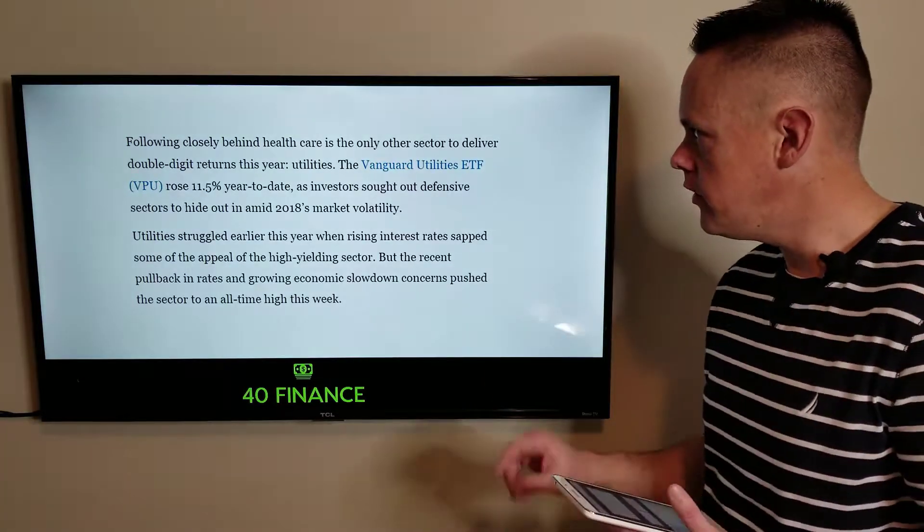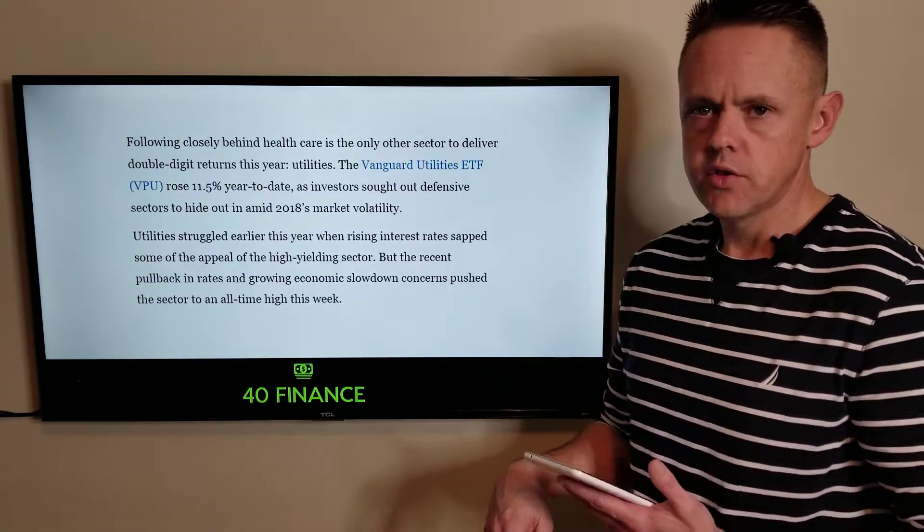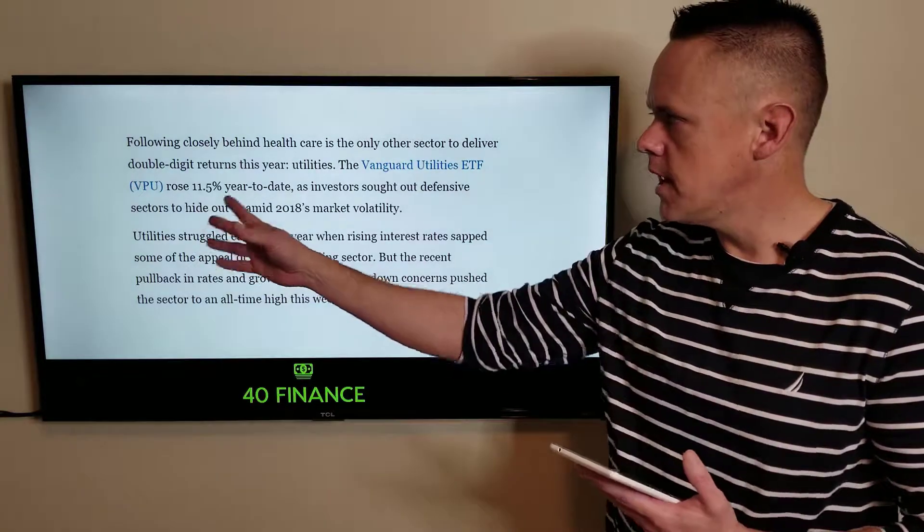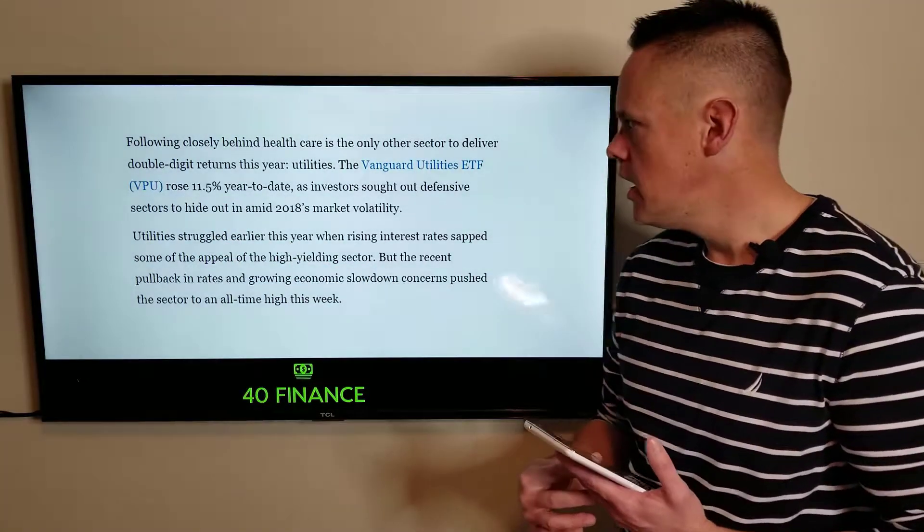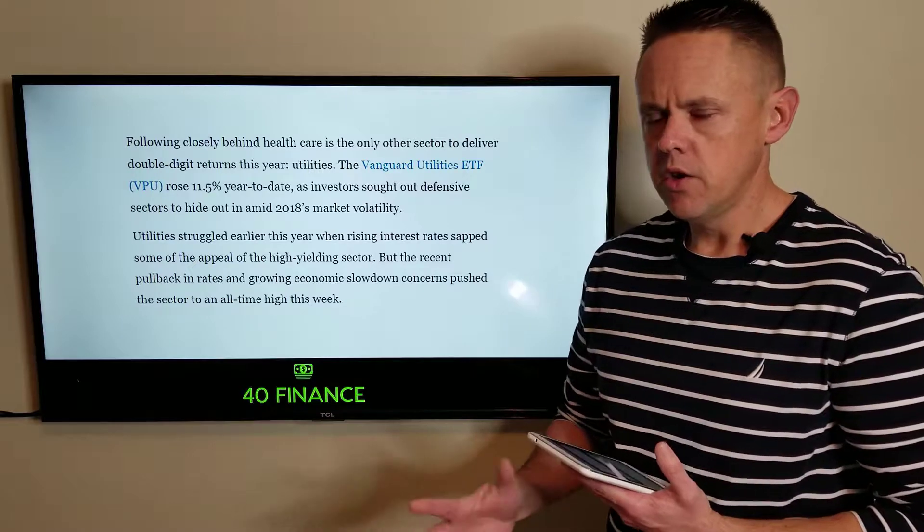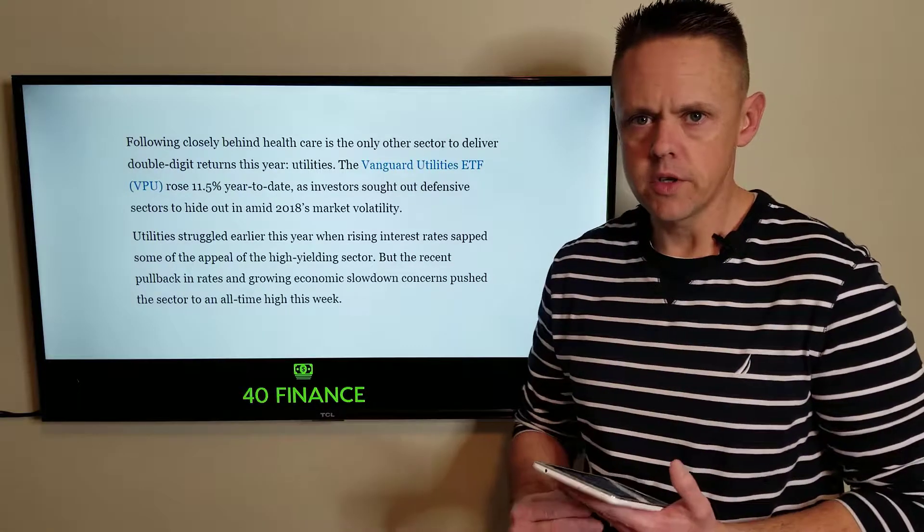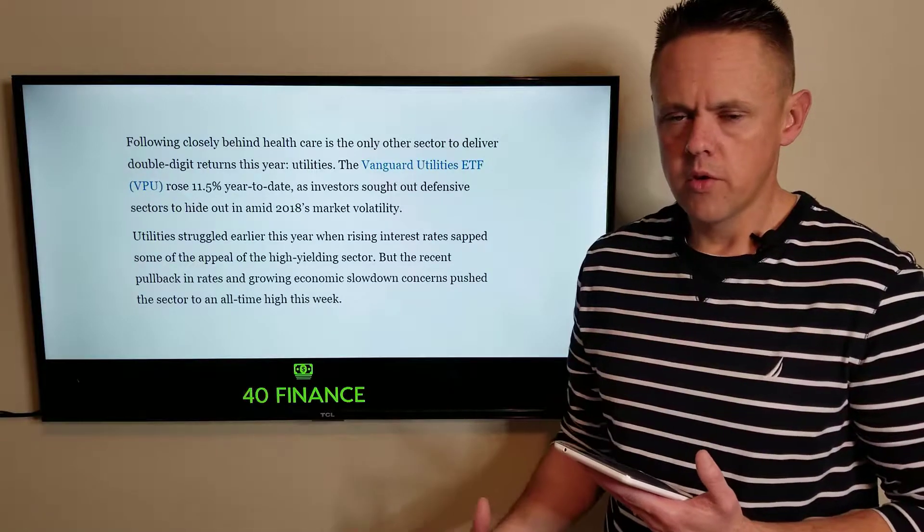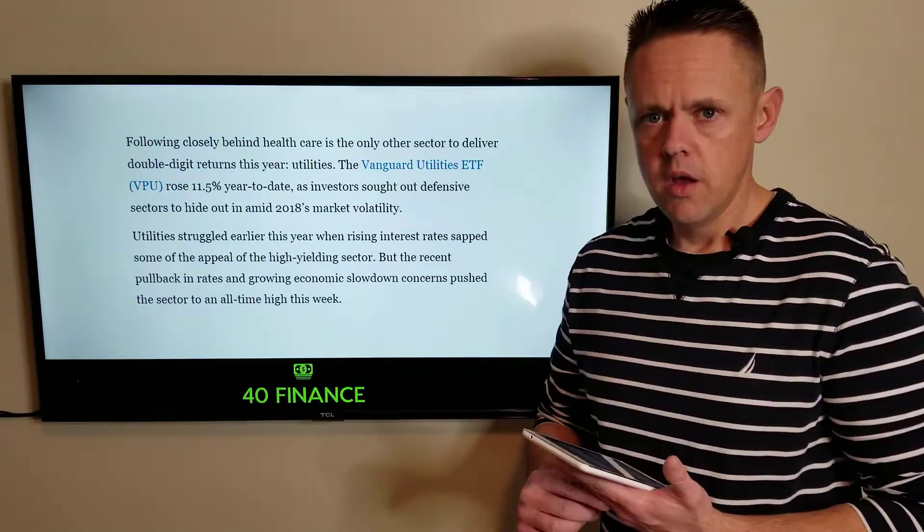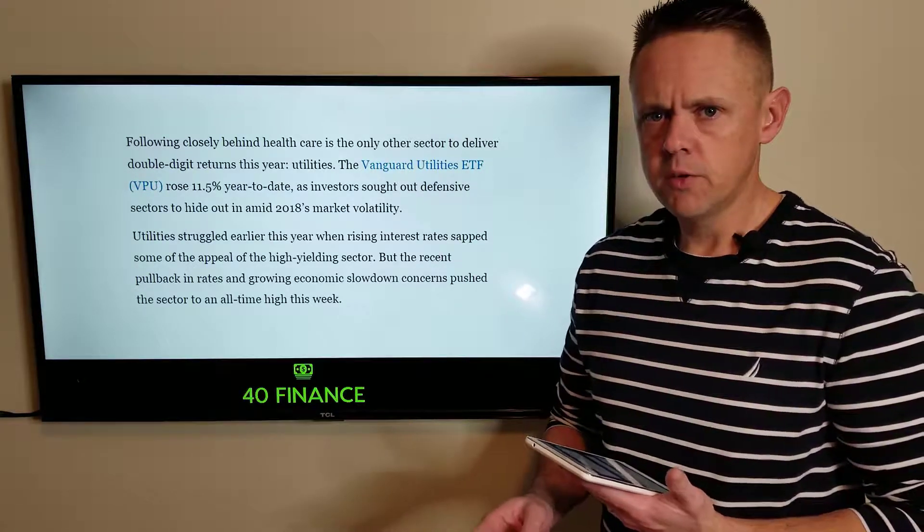Following closely behind healthcare is the only other sector to deliver double-digit returns, and that is utilities. The Vanguard Utilities ETF, ticker symbol VPU, rose 11.5% year to date as investors sought out defensive sectors to hide out in amid 2018's volatility. You're going to see a lot more of this over the next 12 months as people shift to safer stocks that don't necessarily have high growth portfolios, but they typically pay dividends and are very stable.